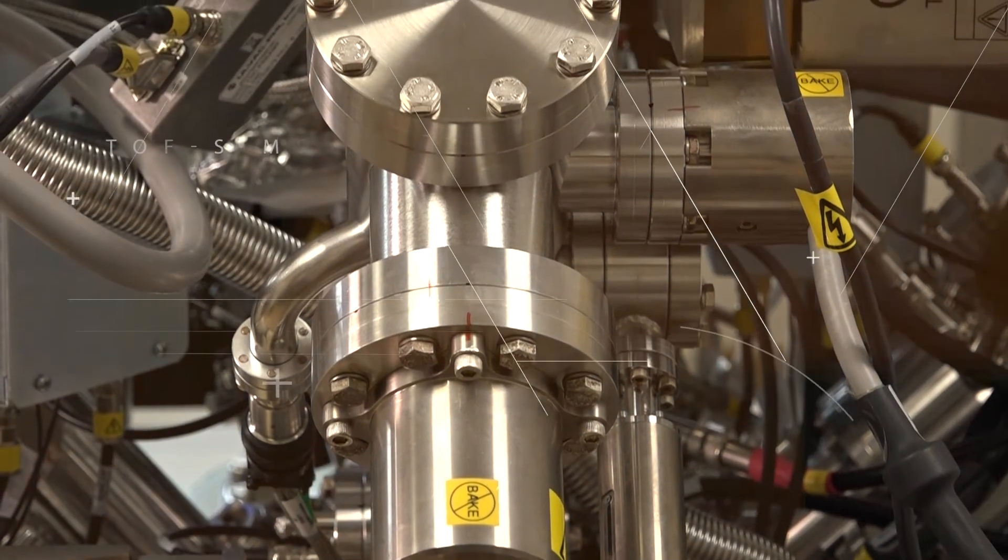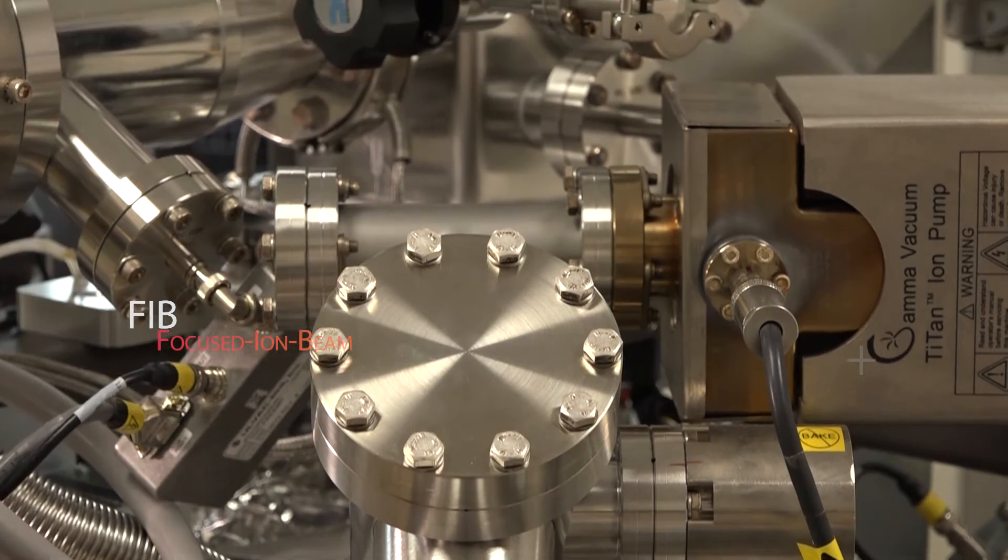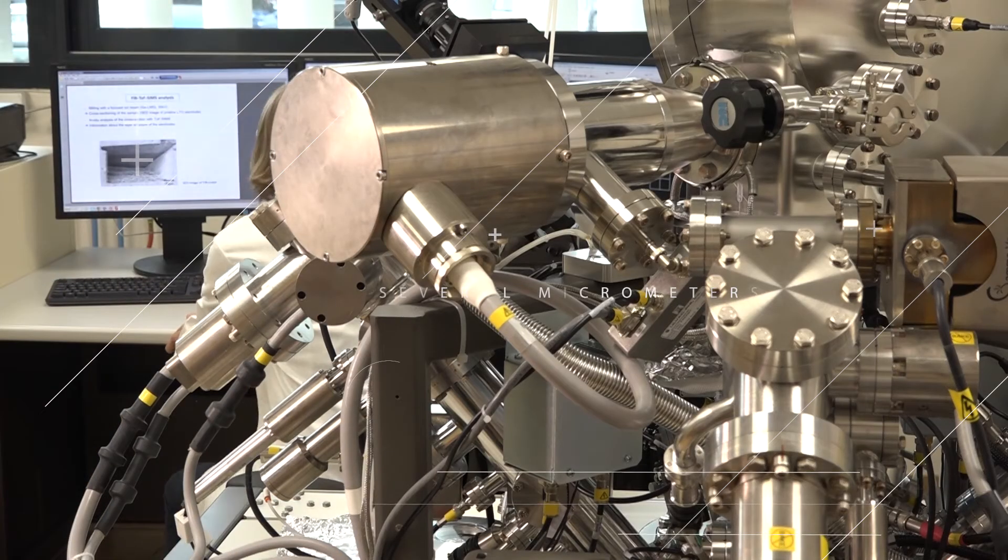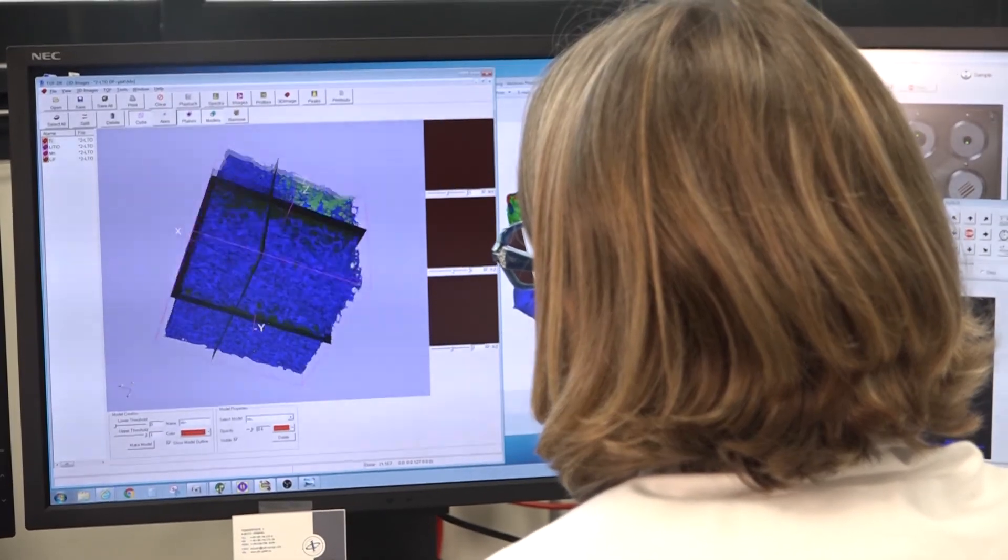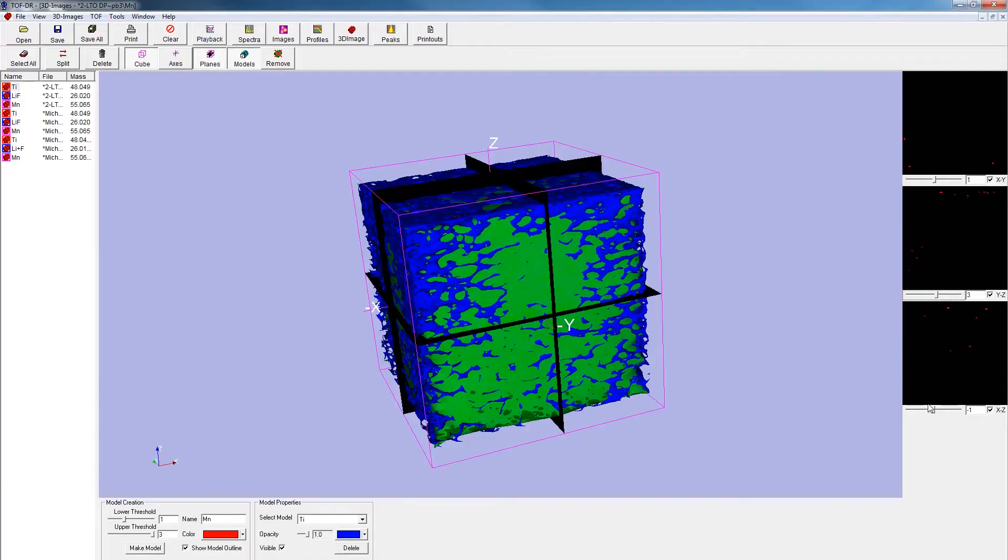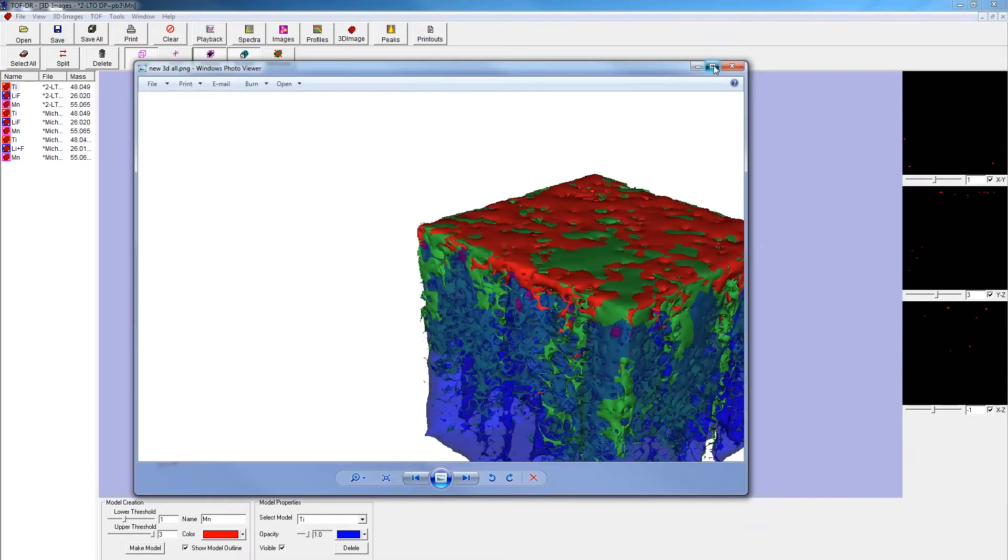A specificity of our TOF-SIMS machine is an in-situ focused ion beam, FIB, which allows performing 3D tomography over several micrometers. One of our main research fields is the study of lithium or sodium ion batteries for electric vehicles, smart grids, or electronic devices.